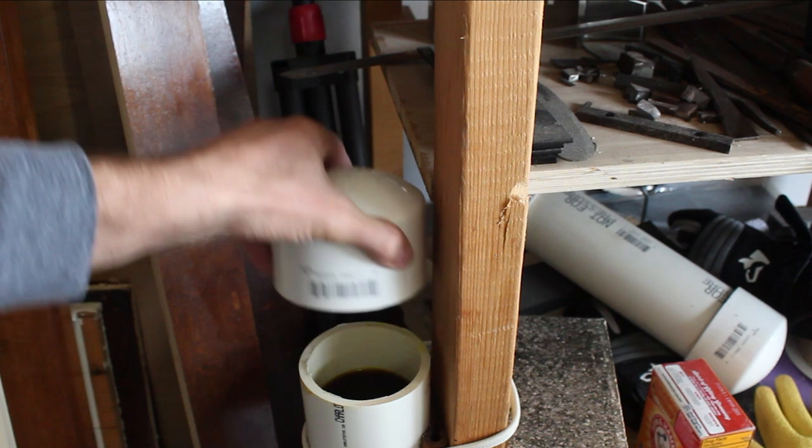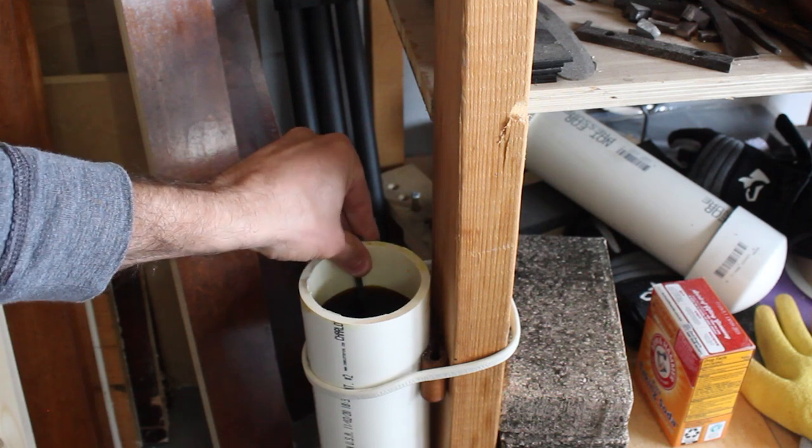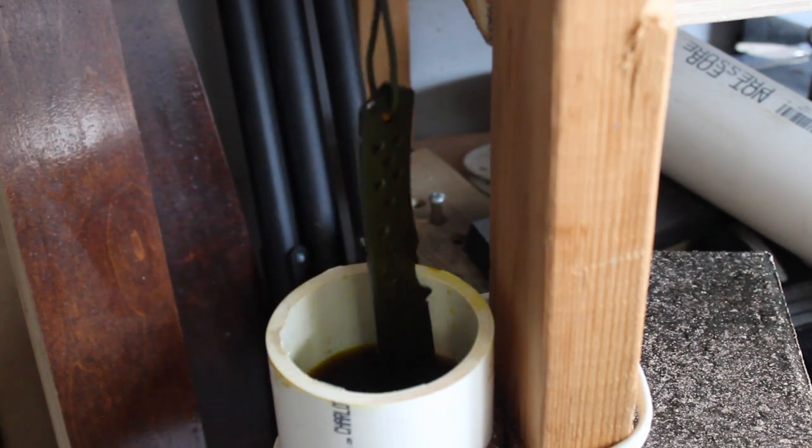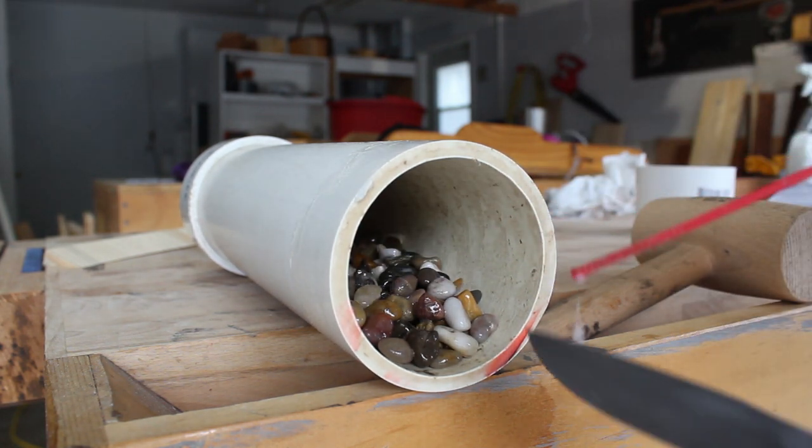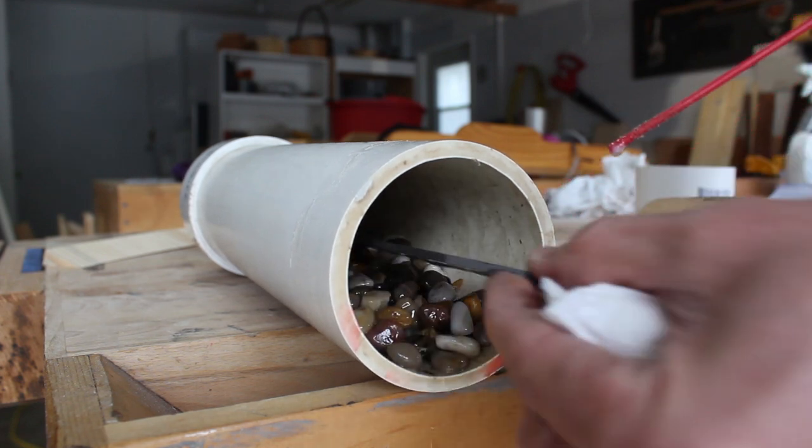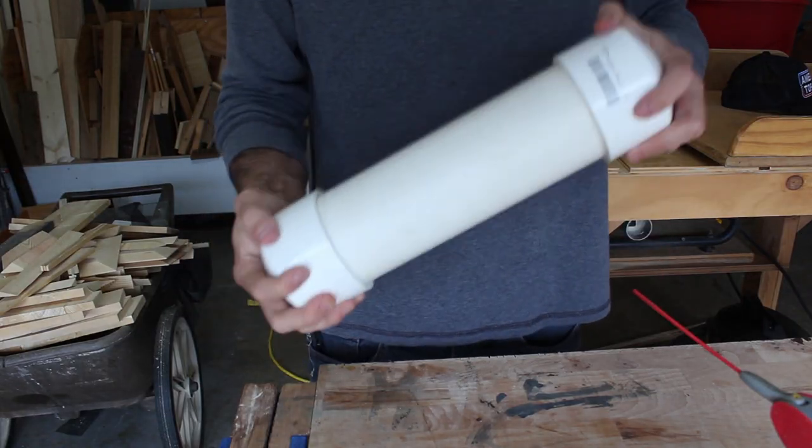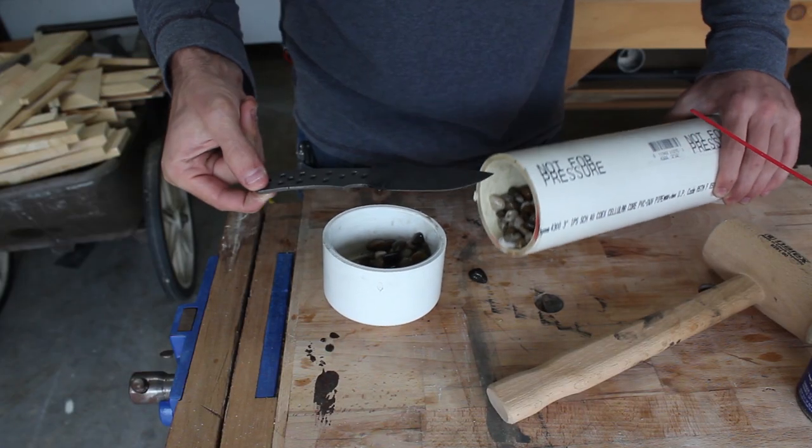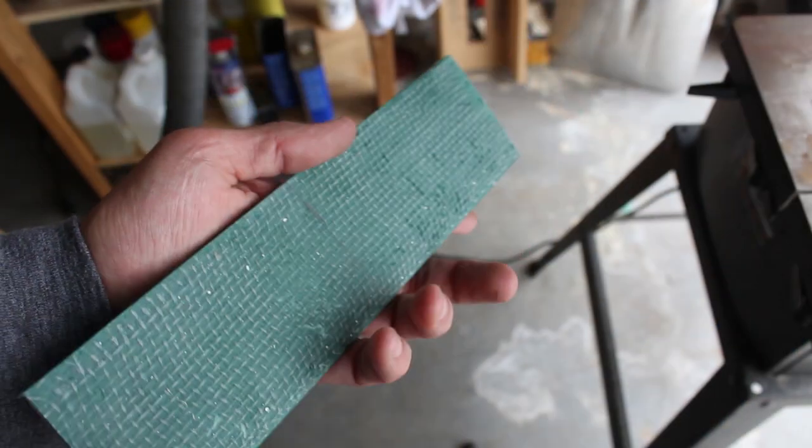Once I'm done hand sanding the knife to 320 grit I will acid etch it in ferric chloride and then I will stone wash the knife. For the knife scales I will be using this homemade green burlap micarta.